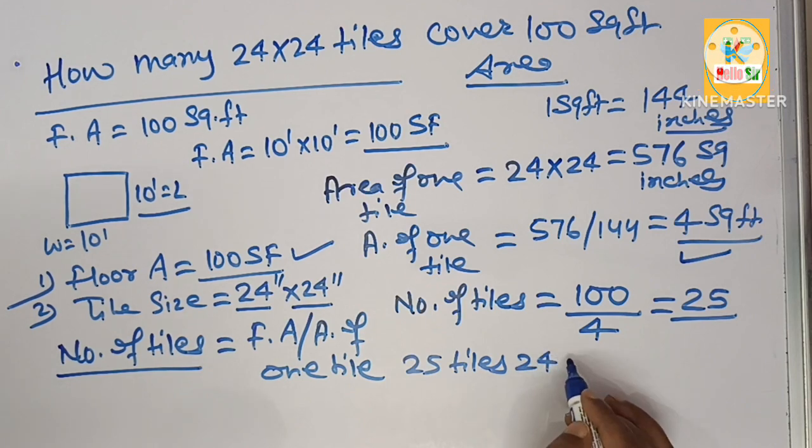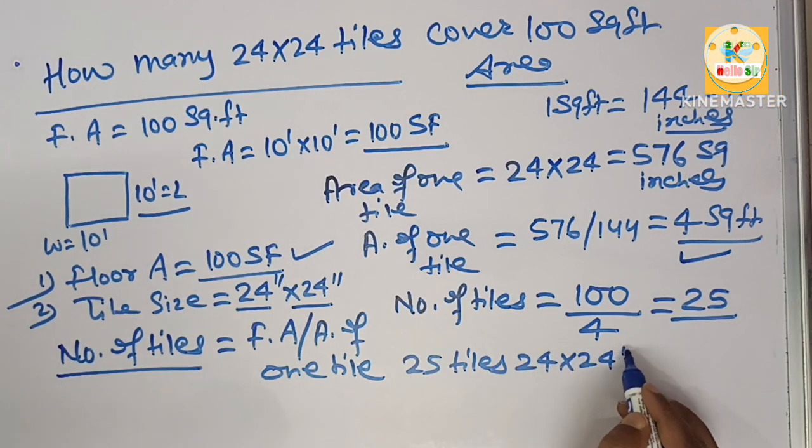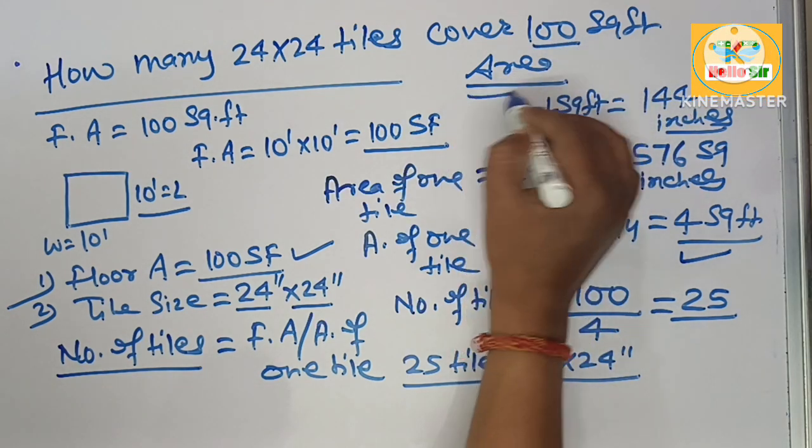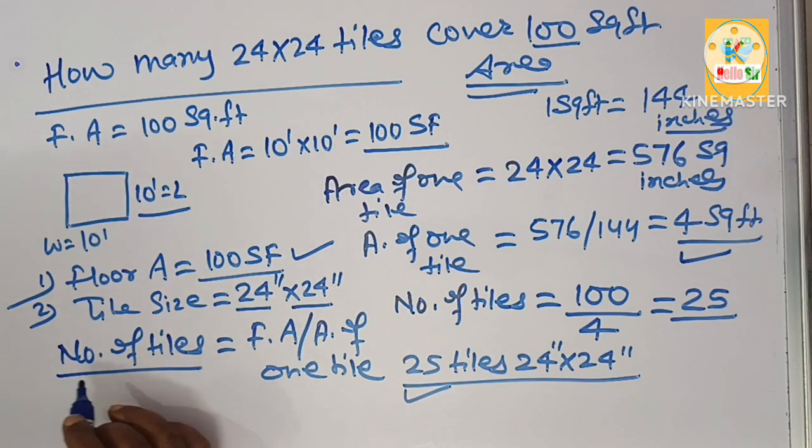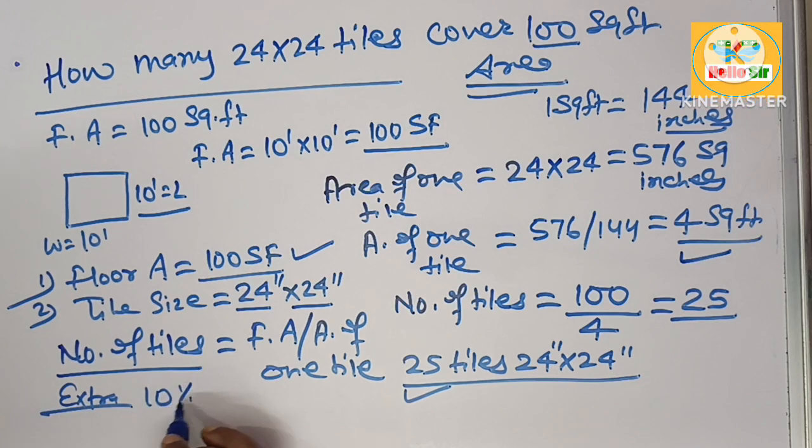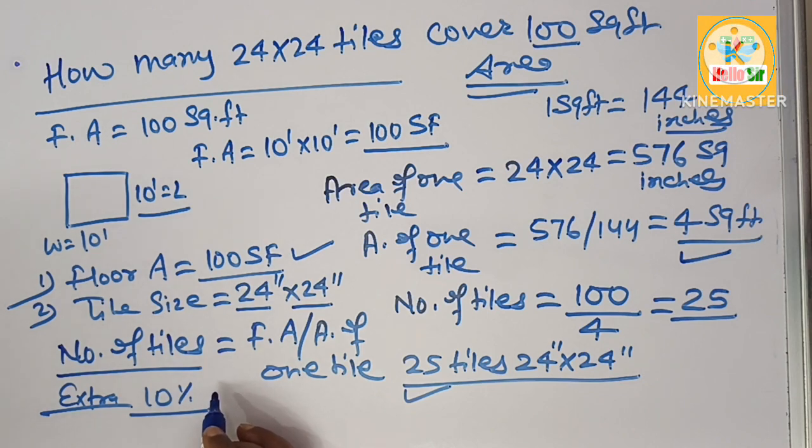25 tiles of 24 inch by 24 inch required to cover 100 square foot area. Your answer is 25 tiles. Our recommendation is always buy extra 10 percent tile which may be damaged during transportation, installation, or storage. Thank you.